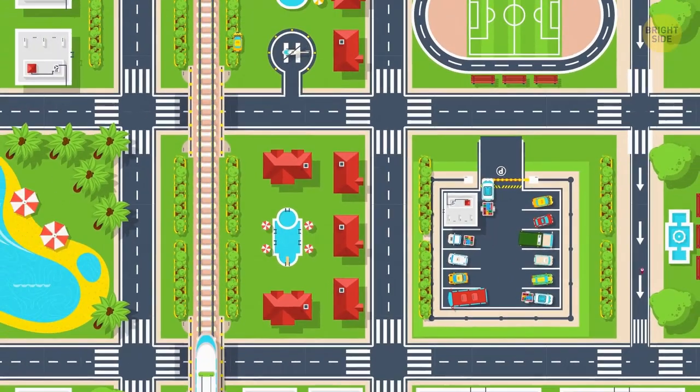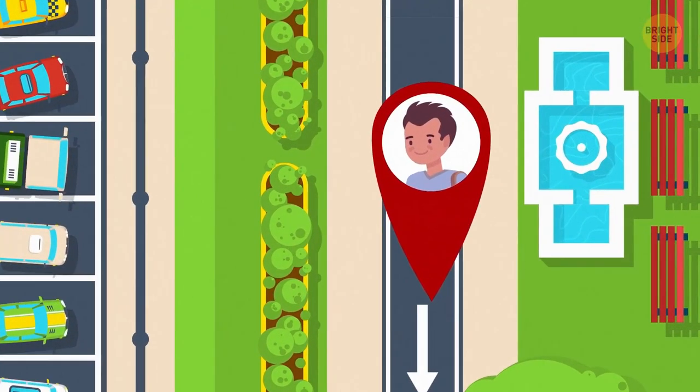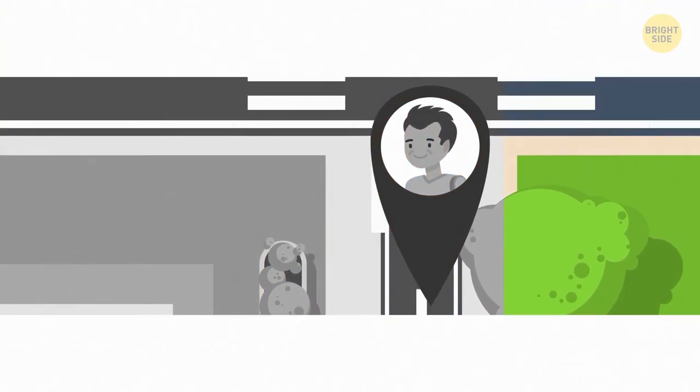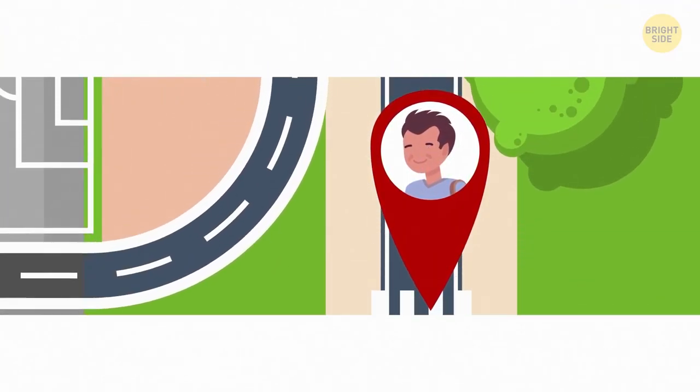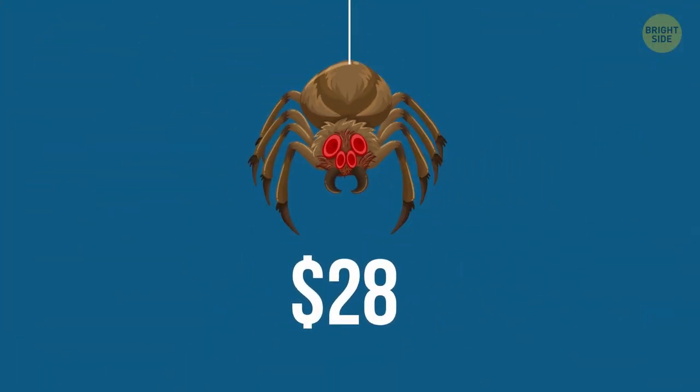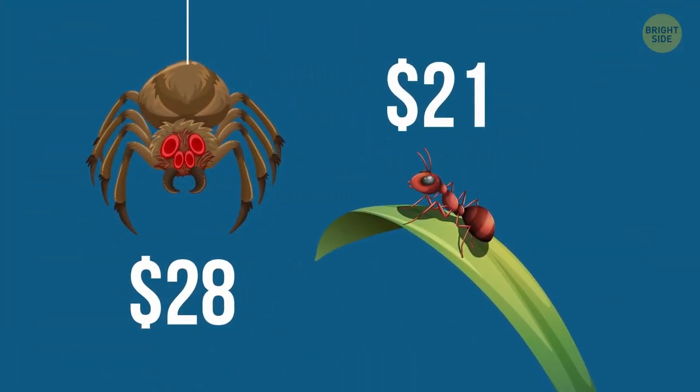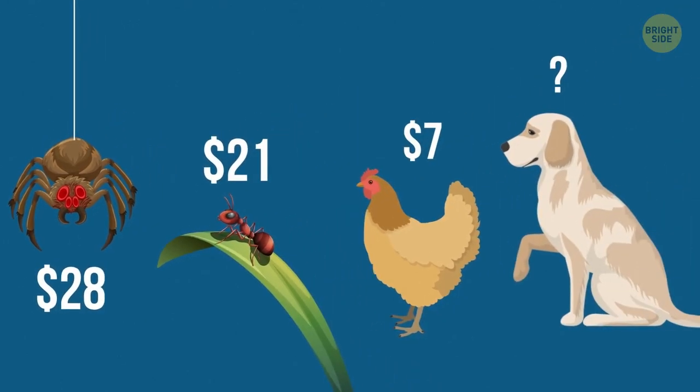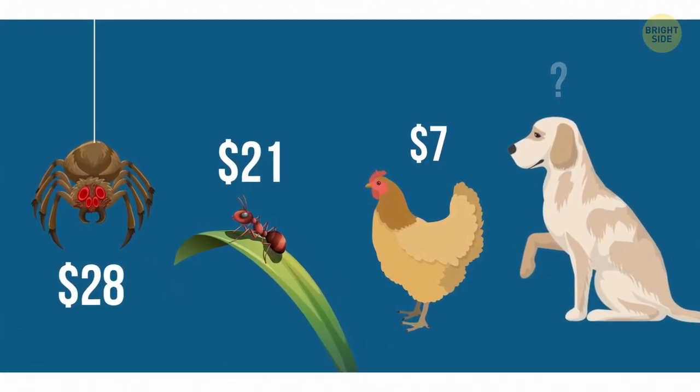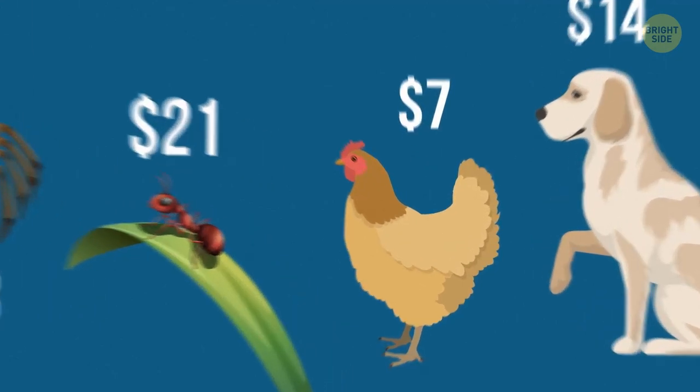40. A boy, who was just learning to drive, went down a one-way street, but in the wrong direction. Still, he didn't break the law. How is it possible? Well, he was walking. 41. A spider got $28, an ant $21, and a chicken was given $7. How much money will the dog get? $14. $3.50 per leg.